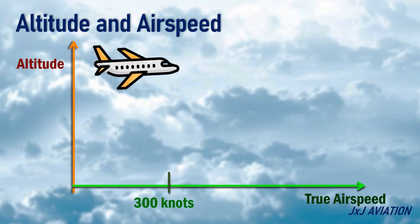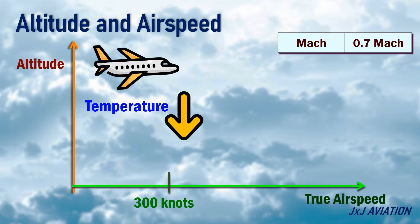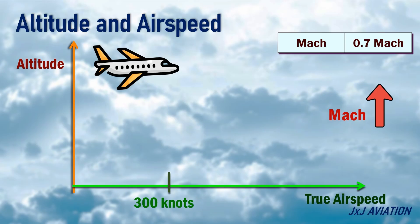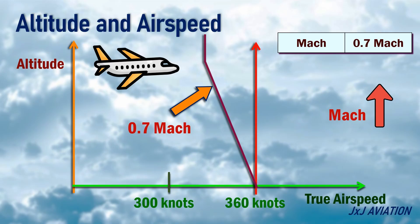Now let's look at the variation of Mach number with altitude. As the altitude increases, the temperature decreases, and as the temperature decreases, the Mach number will increase. If we look at the variation of Mach 0.7 with altitude, it would look like this. At the lowest level, Mach 0.7 corresponded to a certain true airspeed. At higher altitudes, the same true airspeed would correspond to a higher Mach number, so Mach 0.7 will correspond to a lower true airspeed.